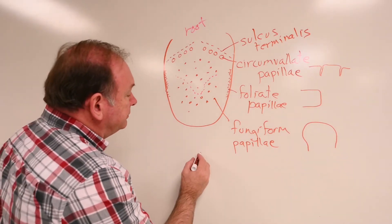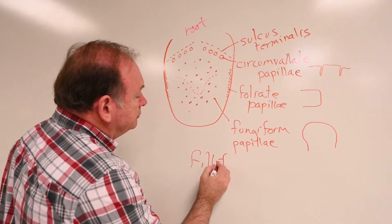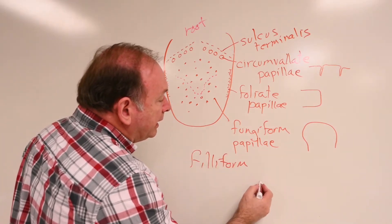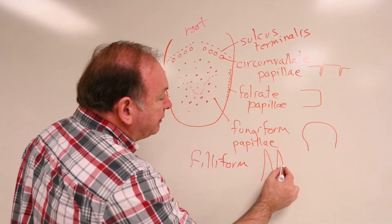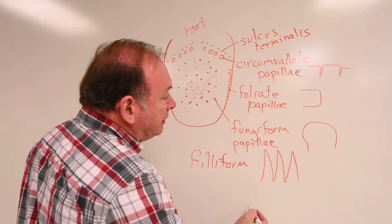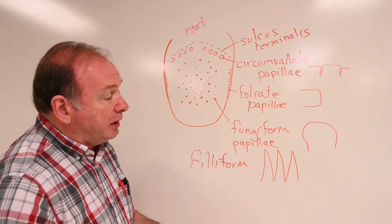Filiform papillae are all over. And like I said, they make these pointed projections one after the other on the surface of the tongue. And this is all epithelium.